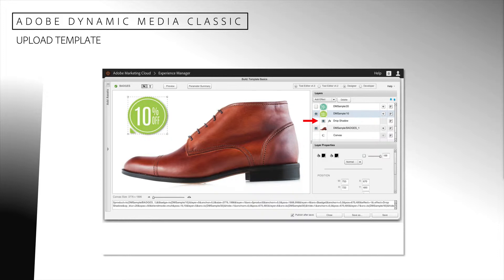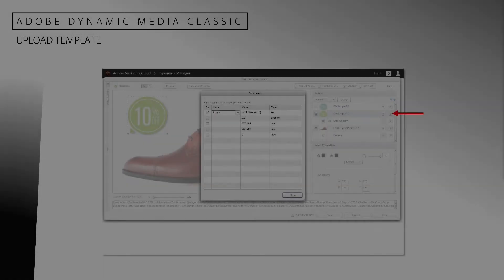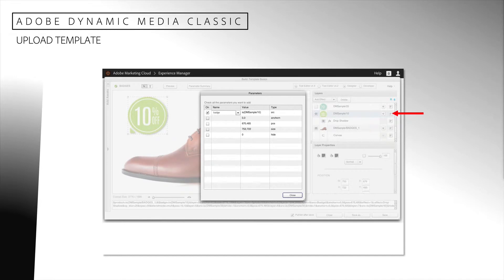Now we will edit the badges template. Notice how the layers have been translated into our template. I have added a drop shadow effect to the first badge layer to help emphasize it. Now we will parameterize the template. We will click on the P icon to the right of the badge. This brings up the parameters dialog. I will check the first row which contains the badge name, and I will set the name of the parameter to "badge."